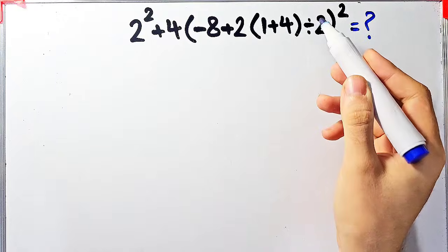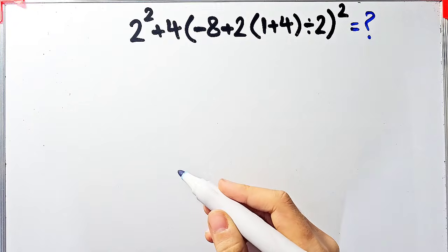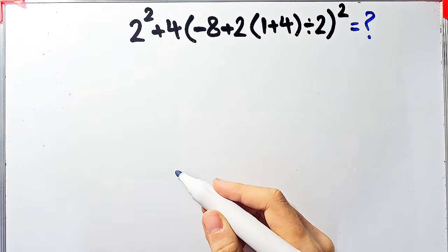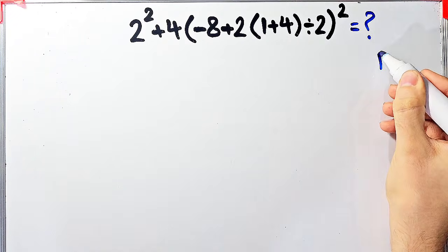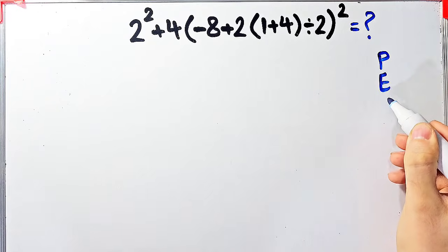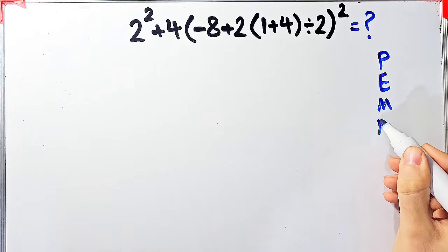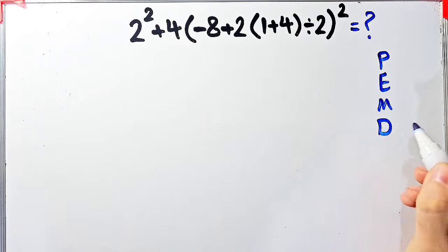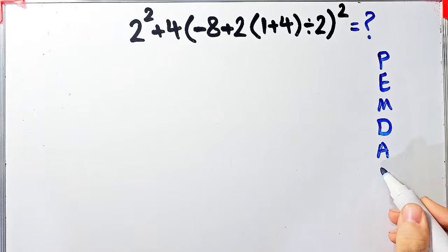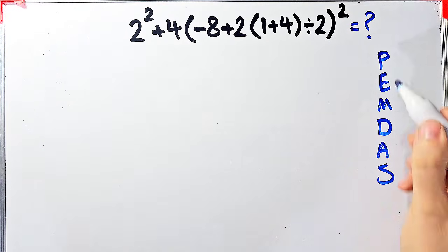To solve this question we need to follow the order of operations, which is PEMDAS. PEMDAS shows the priority of the mathematical operations, and if you don't pay attention to this rule you get the wrong answer. In this rule, P stands for parentheses.